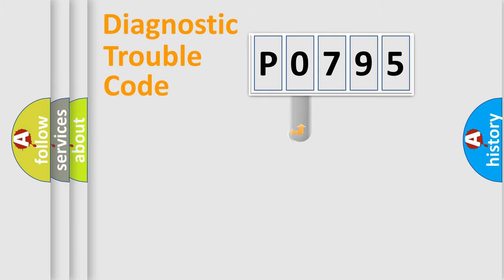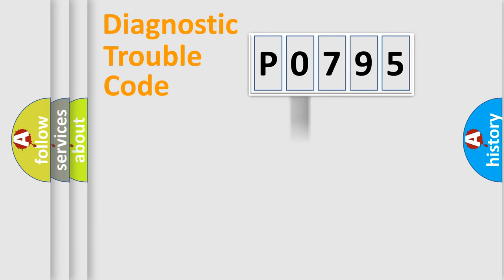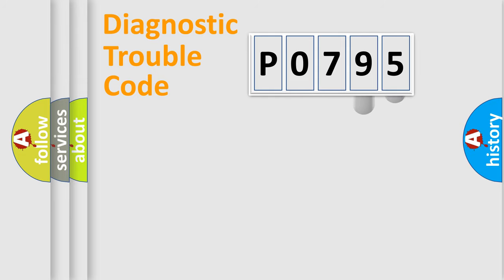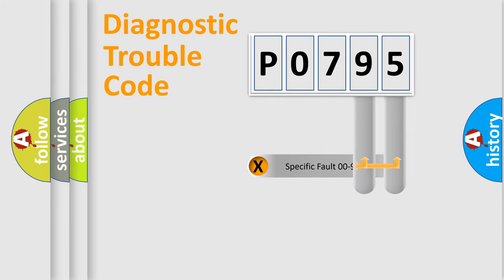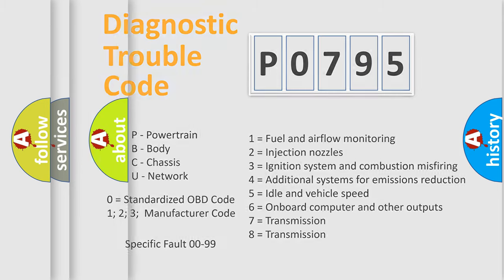This distribution is defined in the first character of the code. If the second character is expressed as zero, it is a standardized error. In the case of numbers 1, 2, or 3, it is a more manufacturer-specific expression of the car-specific error. The third character specifies a subset of errors, and only the last two characters define the specific fault of the group. This division is valid only when the second character code is expressed by the number zero.